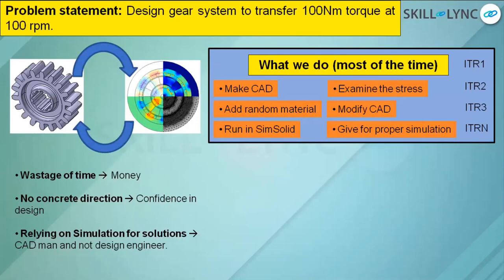The problem with this system is that if you see the iterations — ITR one, two, three — there are a lot of iterations going into the picture, so you are wasting a lot of time. Time is money for every company; every second you spend costs a lot. And when you do not have a concrete direction of confidence in the design — you just made a CAD and gave it for simulation — you don't have the direction behind it. Will it really fail? Will it pass? By how much?